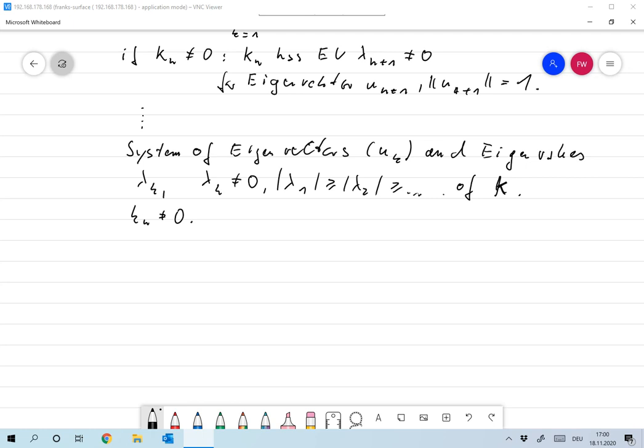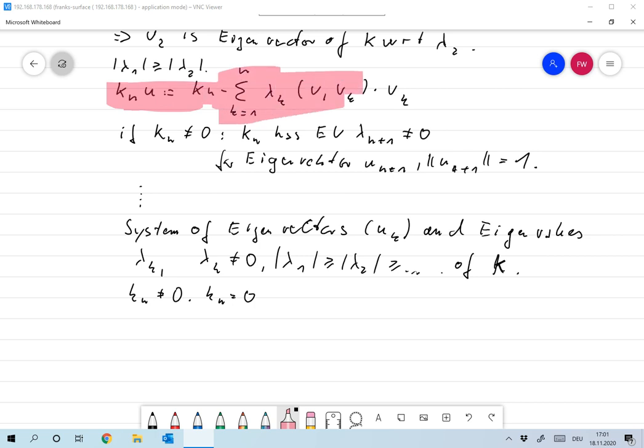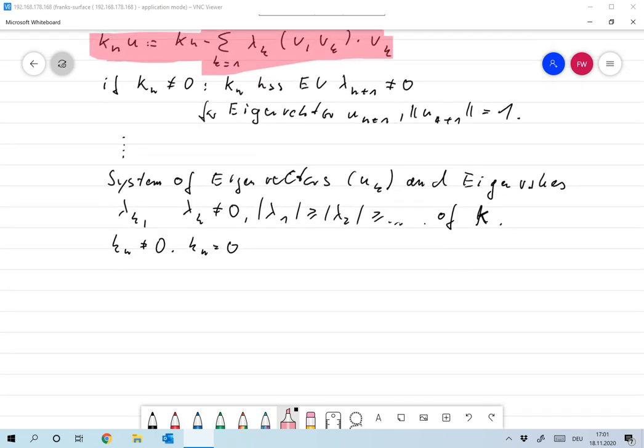If kₙ is equal to 0, then we see that k has an extremely simple structure, because if this is 0, then ku can be written as the sum of k from 1 to n, λₖ times the scalar product of u and uₖ times uₖ. And for this simple structure, everything which I'm going to prove is going to be very simple. So if kₙu is 0, then the sequence of eigenvalues and eigenvectors we have is just finite. So later when I'll be talking about infinite series, just think of finite series at that point, and then everything's going to be okay.